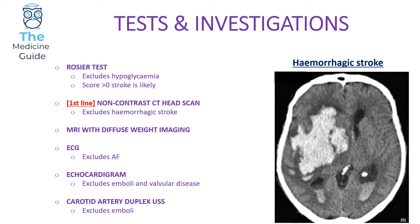An ECG is performed to exclude signs of atrial fibrillation — the patient will present with an irregularly irregular rhythm and absent P waves. AF is a key risk factor for ischemic stroke. An echocardiogram can be performed to exclude emboli and heart valve disease, and a carotid artery duplex ultrasound scan is performed to exclude sources of emboli.